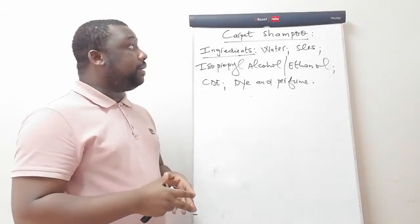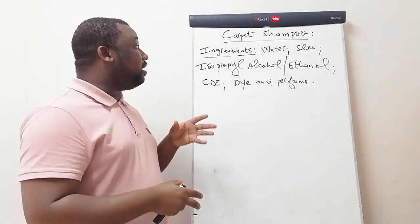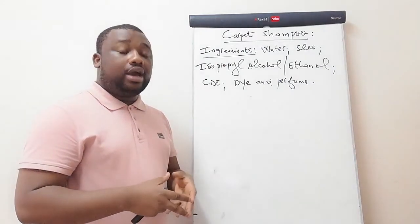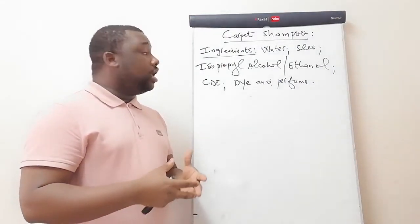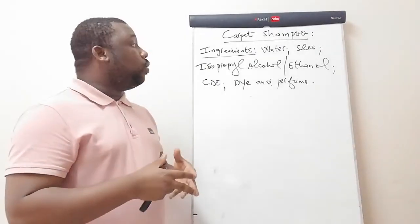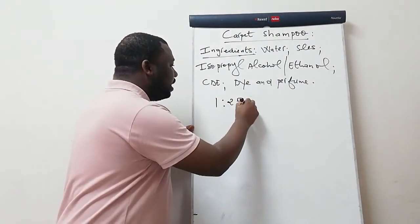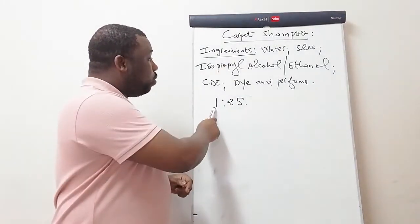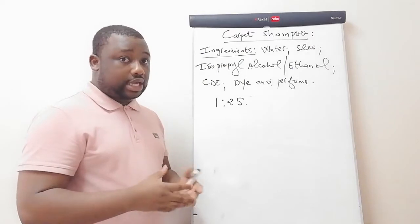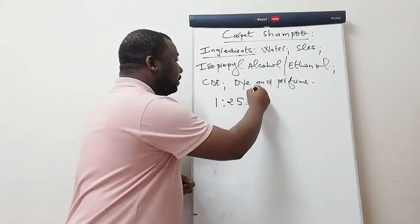Before we get into the sequence and ratios of mixing, there's something particular I'd like to explain about this product. At the end of manufacturing, you obtain a very concentrated product, which you need to dilute before using. If you use it as concentrated as it is, you'll be losing out. The ratio of dilution is 1 to 25 — meaning for every one liter of this carpet shampoo, you mix it with another 25 liters of water before use.